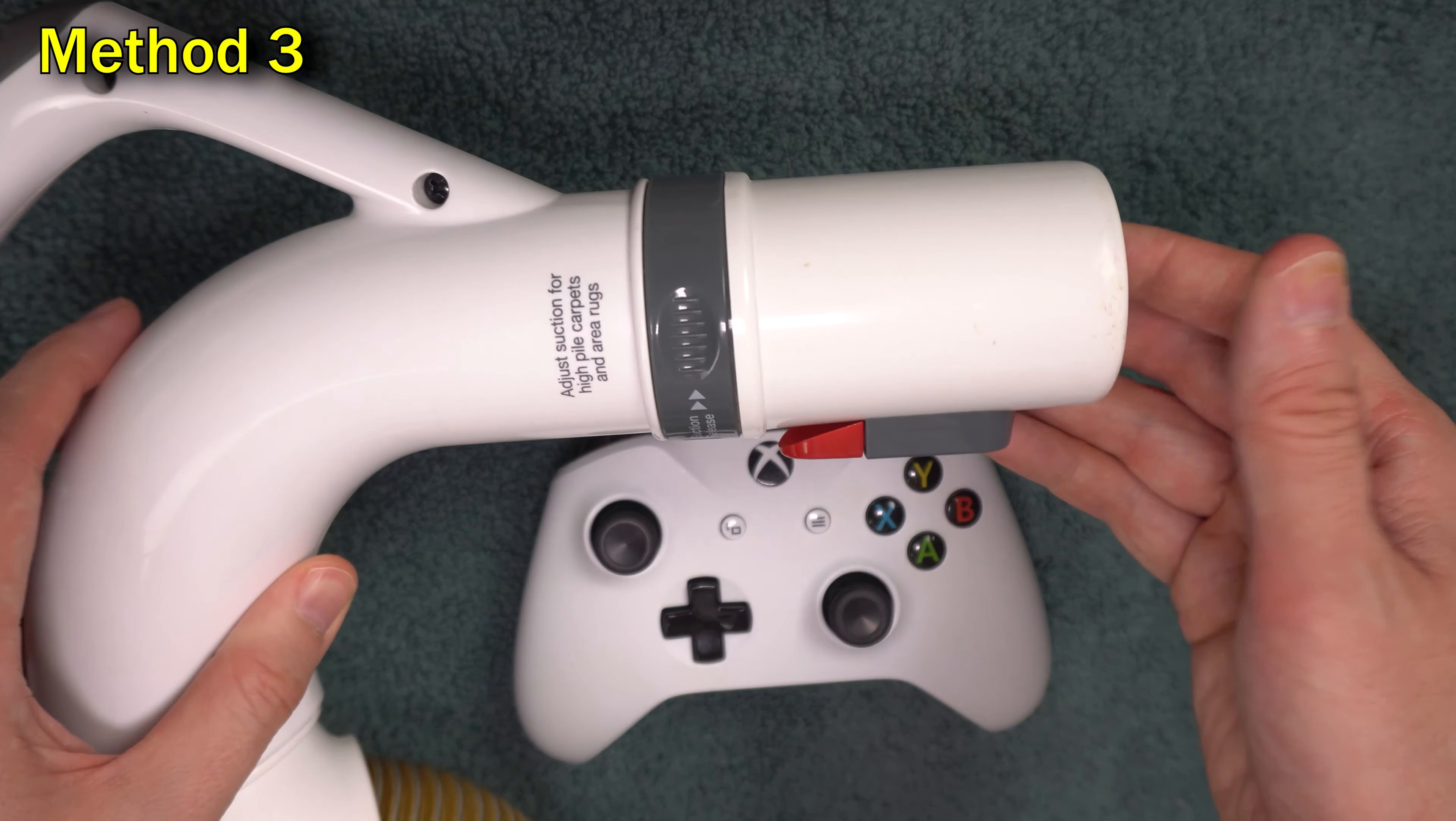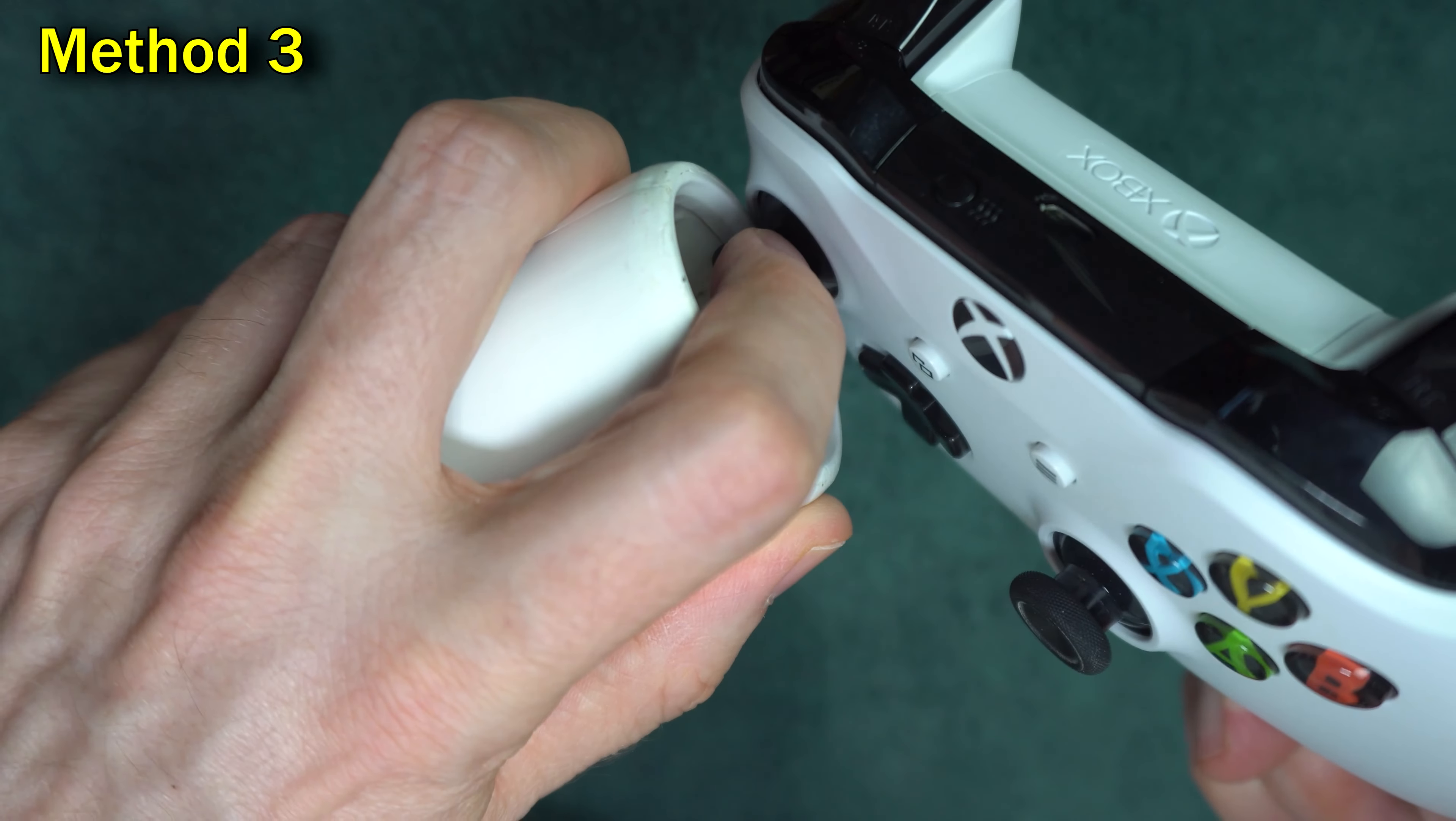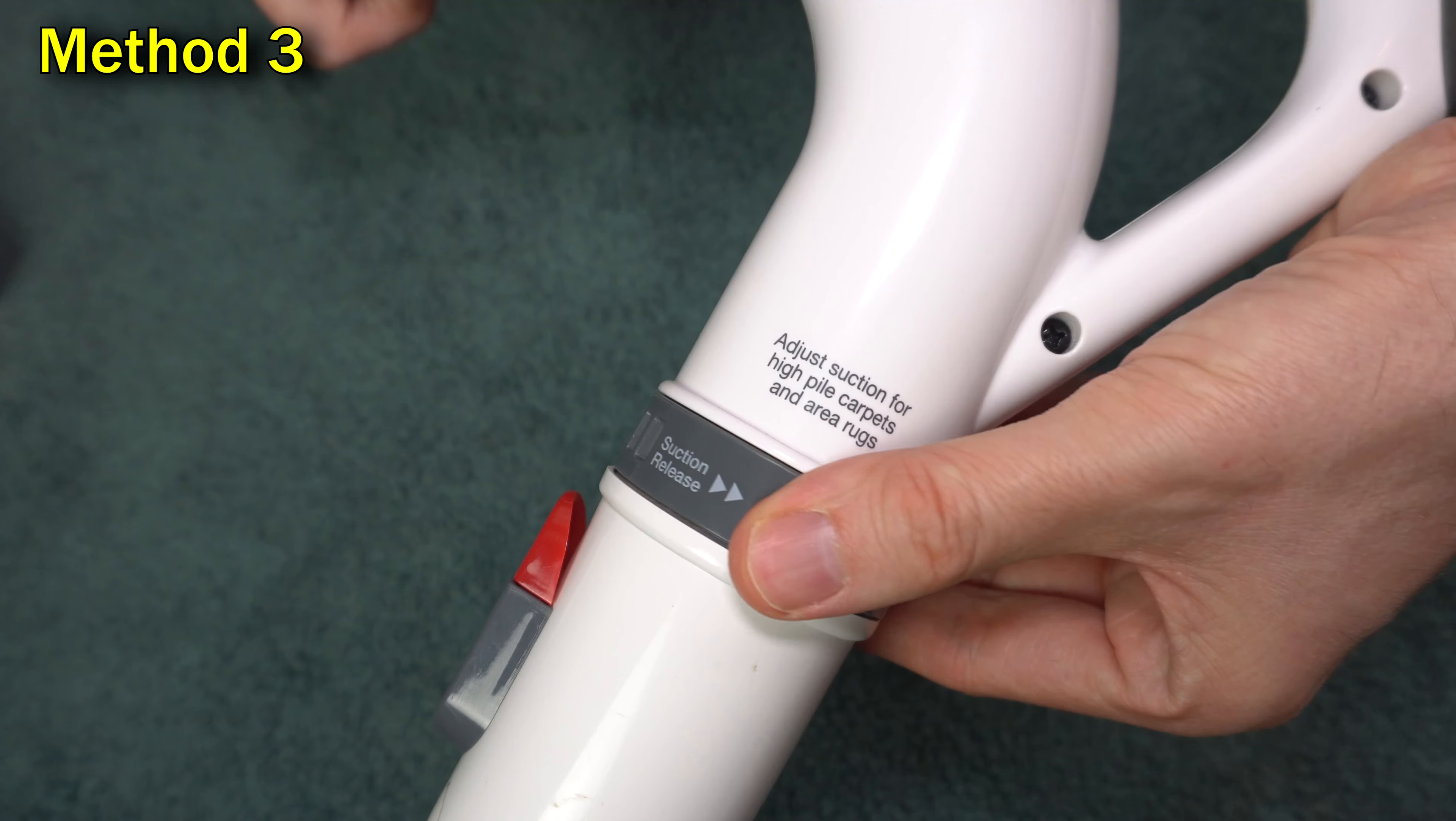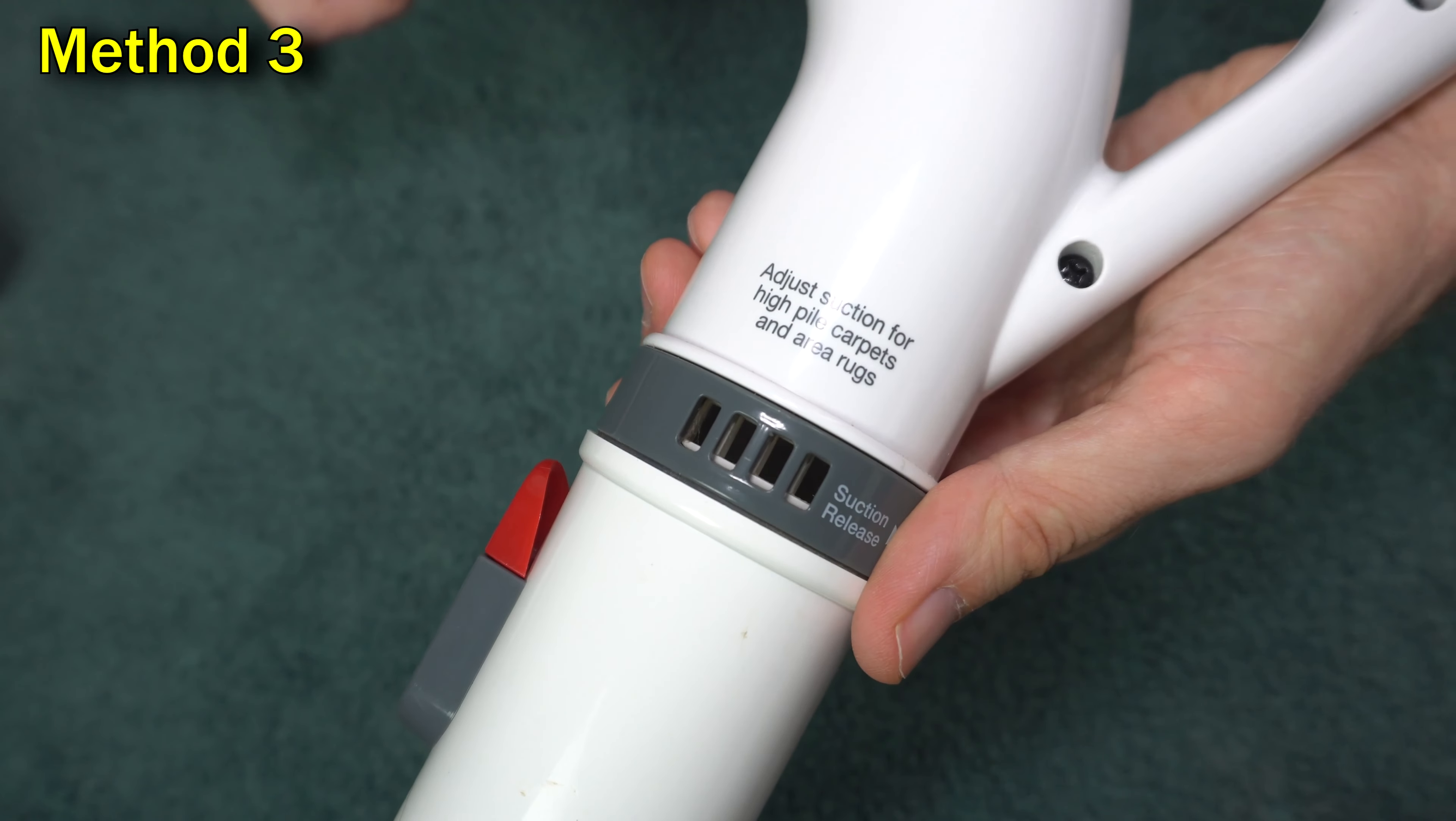If that didn't work, try taking a vacuum cleaner nozzle like this and vacuuming around the stick. Make sure you're pushing the stick in multiple directions as you do this. You may not want to go full suction. If you have an adjustment ring like this, you might want to turn it so that there's less suction.